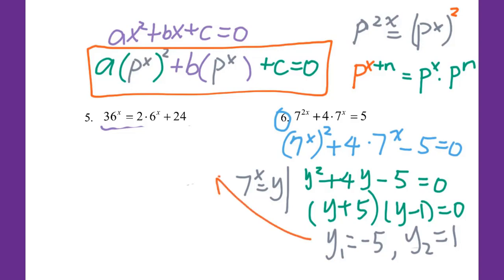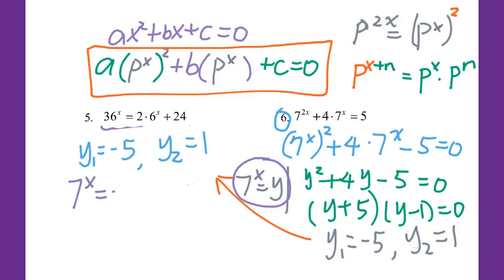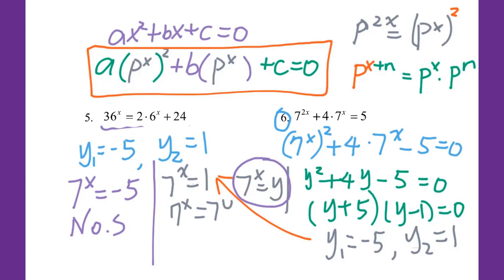I need to plug back in y equals 7 to the x power. For y₁: 7 to the x power equals negative 5 — definitely no solution. For y₂ equals 1: I write 7 to the x power equals 1, which means 7 to the x power equals 7 to the 0 power, so x equals 0. That's the solution for number 6.